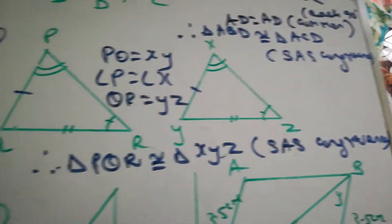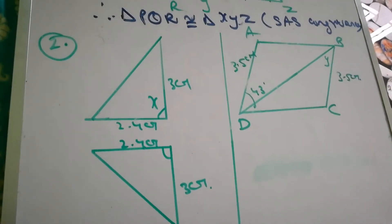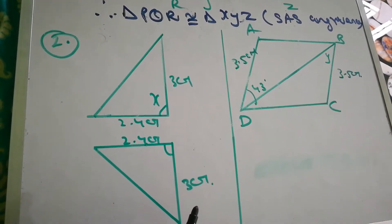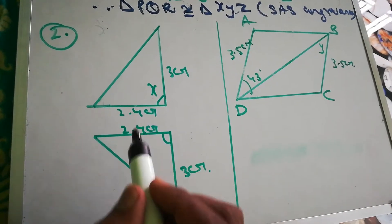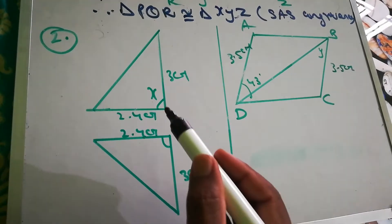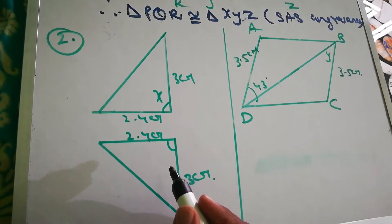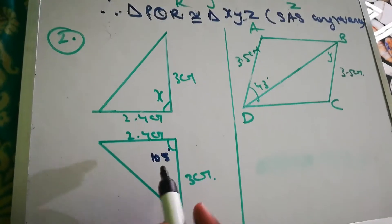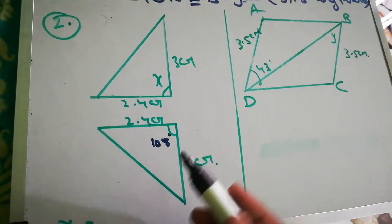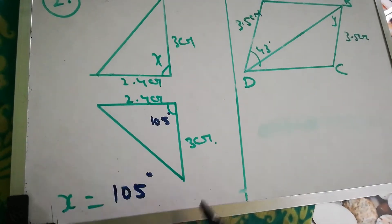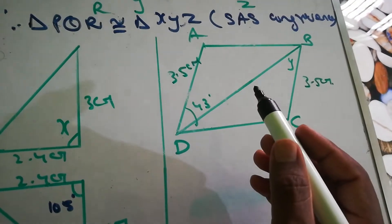Now question 2: find the measurement of the unknown angles marked by small letters in the following pairs of congruent triangles. The diagram shows 2.4 and 2.4, 3 and 3, with the angle given as 105 degrees. So angle X is 105 degrees.